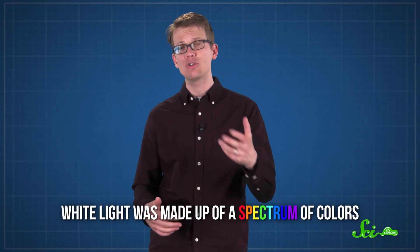Well, back in the mid-17th century, apple-loving Isaac set out to prove that white light was made up of a spectrum of colors. Other scientists had experimented with prisms before, and seen light split into a rainbow.